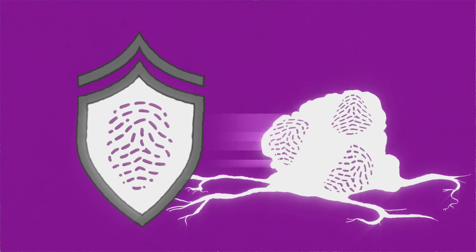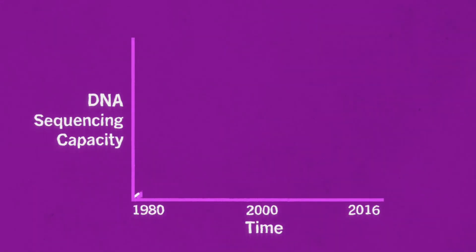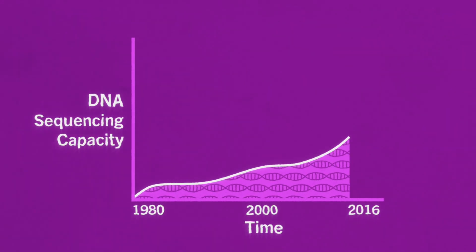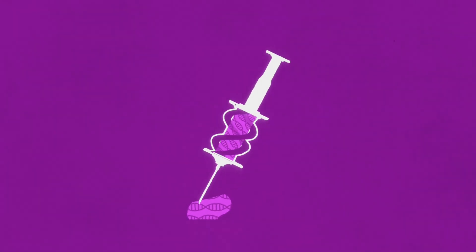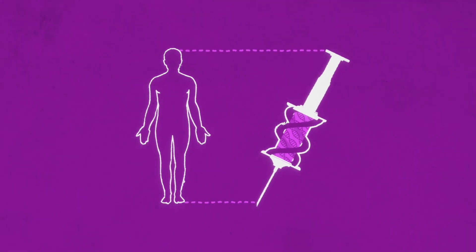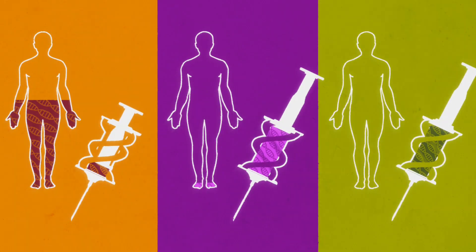However, identifying them has been exceedingly difficult. But today, the whole genome of a tumor can be sequenced in only a matter of days. This makes it possible to tailor a cancer vaccine for an individual person. It's the ultimate form of personalized medicine.